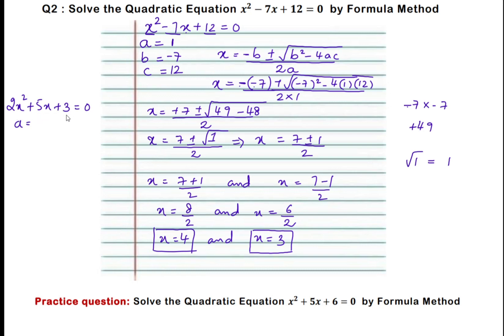For 2x squared plus 5x plus 3 equals 0: find out the coefficients. A equals 2, that is coefficient of x squared. B equals 5, the coefficient of x. C equals 3. Write down the quadratic formula, substitute, and find out the roots. Hopefully you have understood question 2.